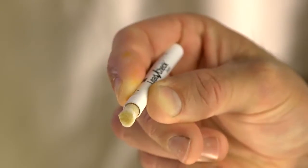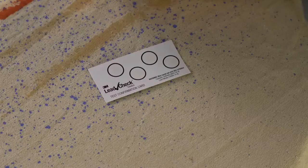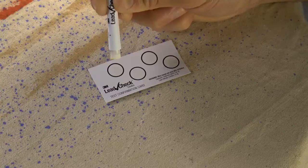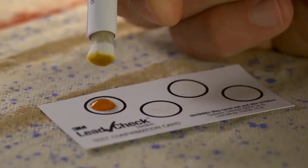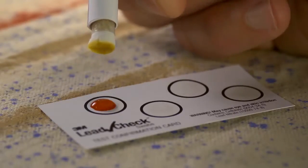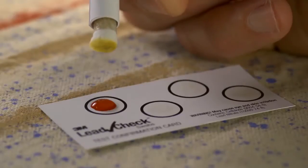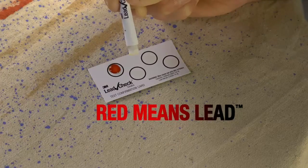If no pink or red color develops, immediately confirm the negative result by squeezing a drop of the 3M LeadCheck reagent liquid onto one of the test confirmation cards. The circle should instantly turn red. Don't forget, red means lead.